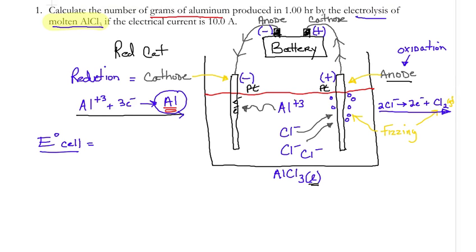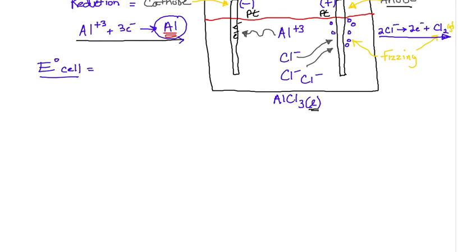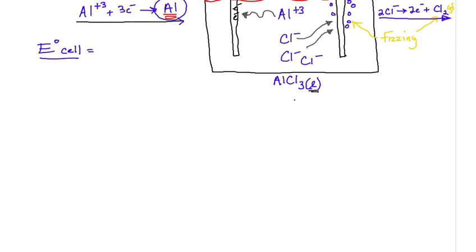Now before we get going, we have to understand what amps are. We understood and we had a discussion what voltage is. Voltage is an electromotor force that pushes the current around. So an amperage, we have 10.0 amps.